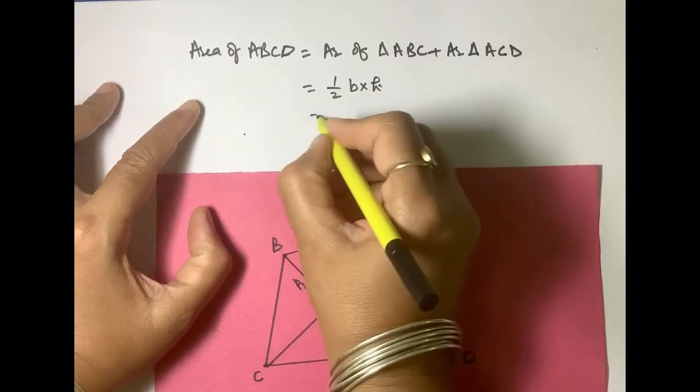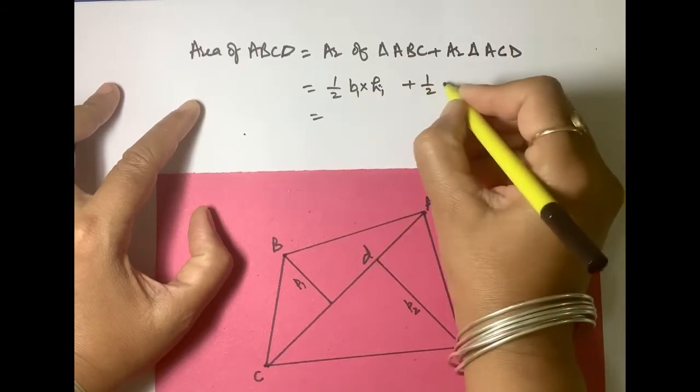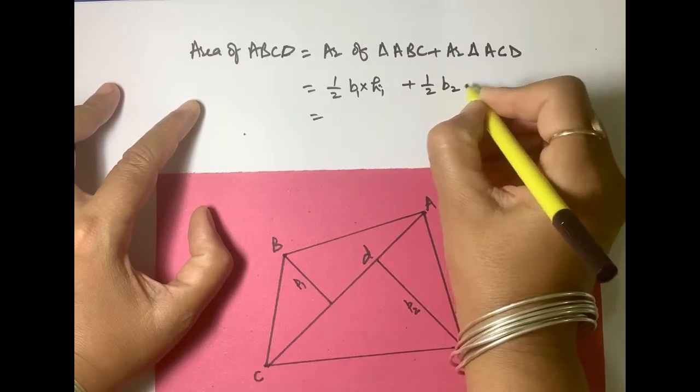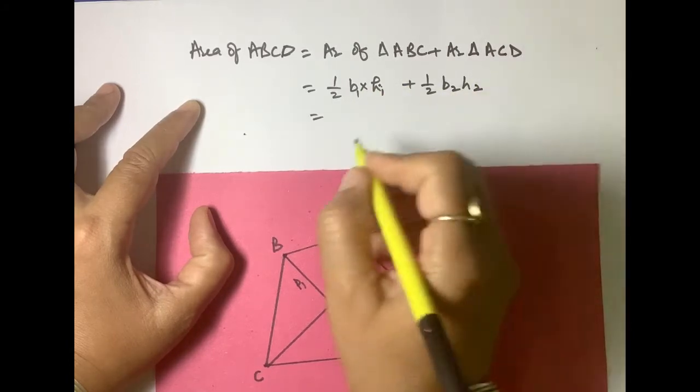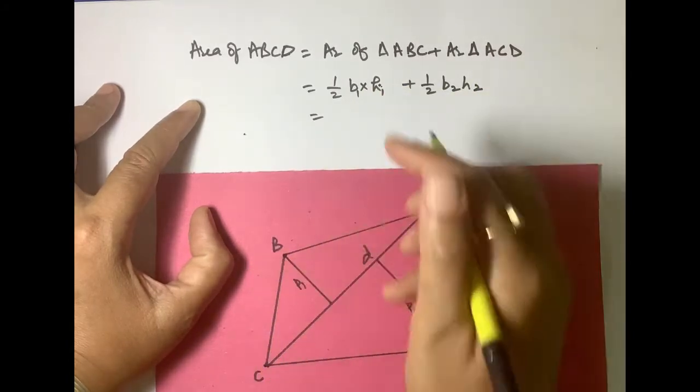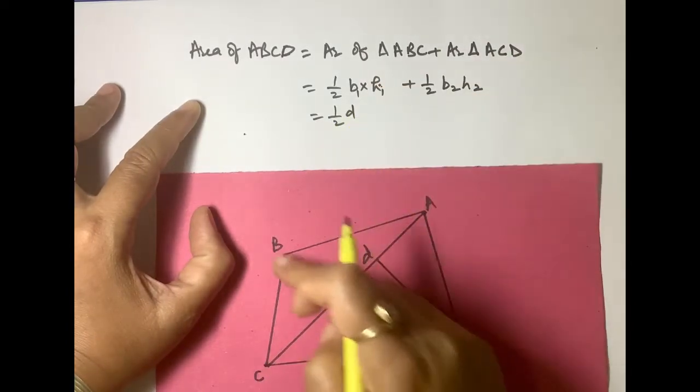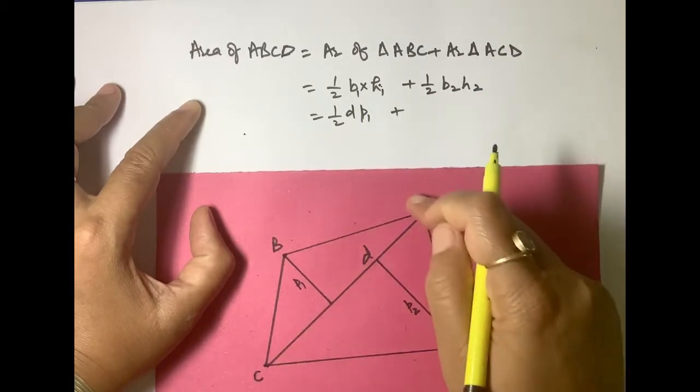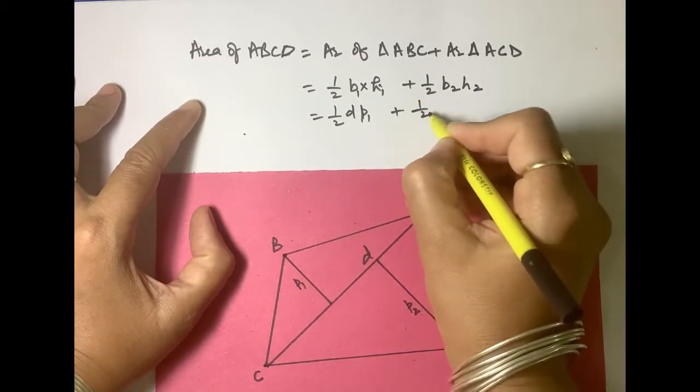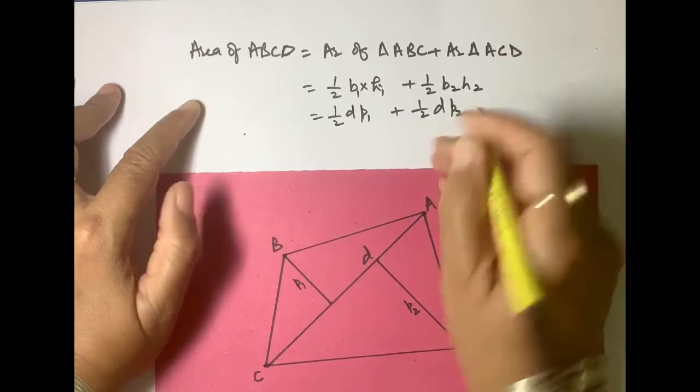Here base is suppose we mark it as B1H1 and B2H2. In this triangle base is D and height is P1. In this triangle base is D and height is P2.